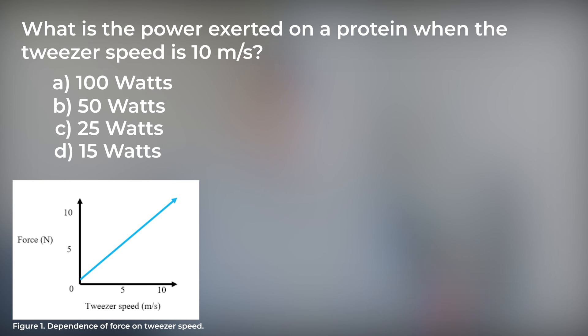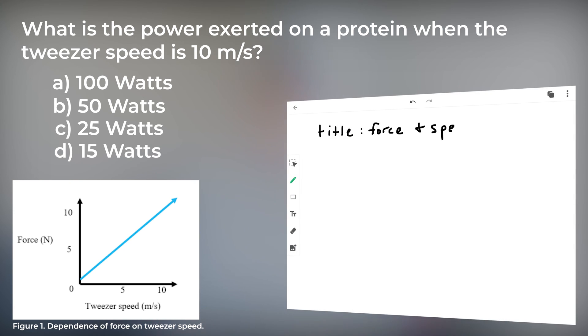So, let's apply those strategies to our problem. You look at the title, which talks about a force and a speed. The x-axis defines a tweezer speed in nanometers per second, and the y-axis defines a force in newtons. The question stem is asking about power, and using MCAT physics strategy number 1, we know that the equation for power is work over time, or w over t.